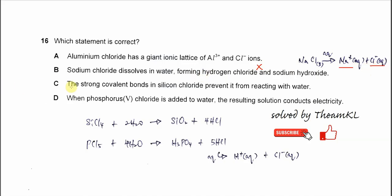For C, the strong covalent bonds in the silicon chloride SiCl4 prevent it from reacting with water. So this one is also wrong. We know that SiCl4 is a simple molecular structure and it reacts with water and forms white precipitate and white fumes. So SiCl4 easily reacts with water and the type of reaction is hydrolysis.